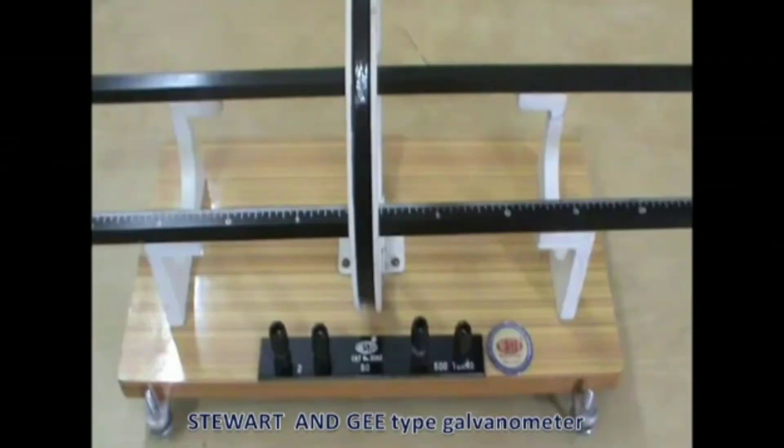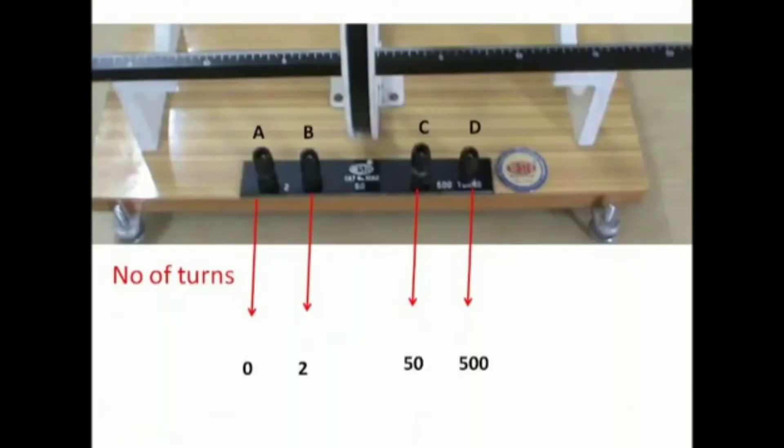Required apparatus are Stewart and Gee galvanometer and magnetic compass.